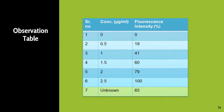Now let us see the observation table. For 0 micrograms per ml of quinine sulfate, that is blank, we adjusted fluorescence intensity to 0%. For 2.5 micrograms per ml we adjusted to 100% as it is the highest concentration. For 0.5 micrograms per ml the intensity was 19%, for 1 microgram per ml it was 41%, for 1.5 micrograms per ml it was 60%, for 2 micrograms per ml it was 79%, for 2.5 micrograms per ml it was 100%. For the unknown, the intensity was 65%. Now we are going to plot the graph of fluorescence intensity versus concentration.